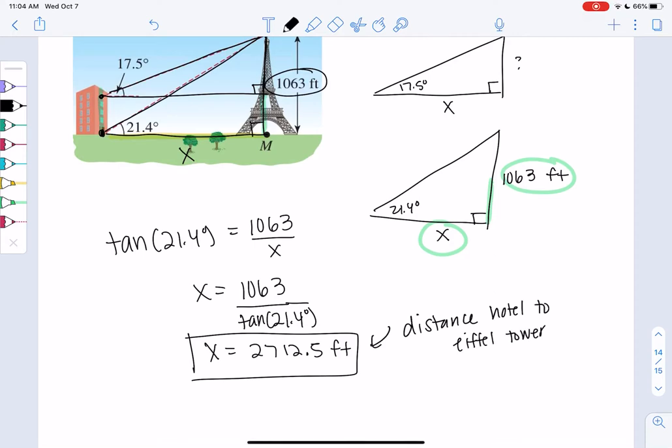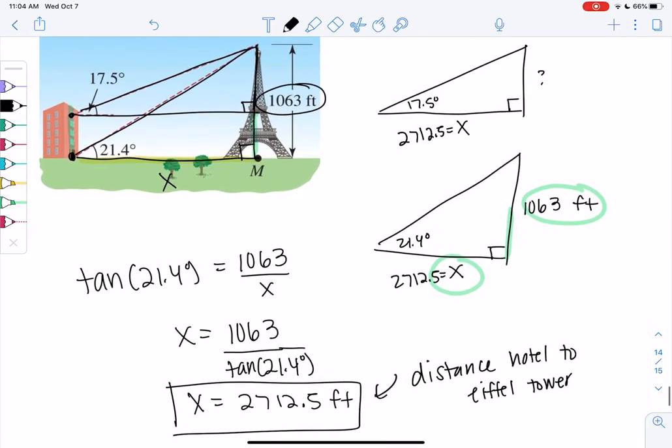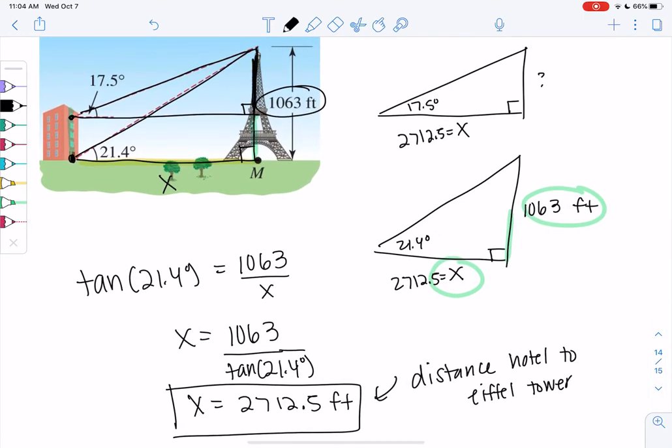And I get X is about 2,712.5 feet. That's actually true for both of the triangles because they both have the same length on the bottom. If I want to find the height of the hotel, I'm going to find the height of the top triangle and then I can just subtract from 1063. Hopefully that makes sense.